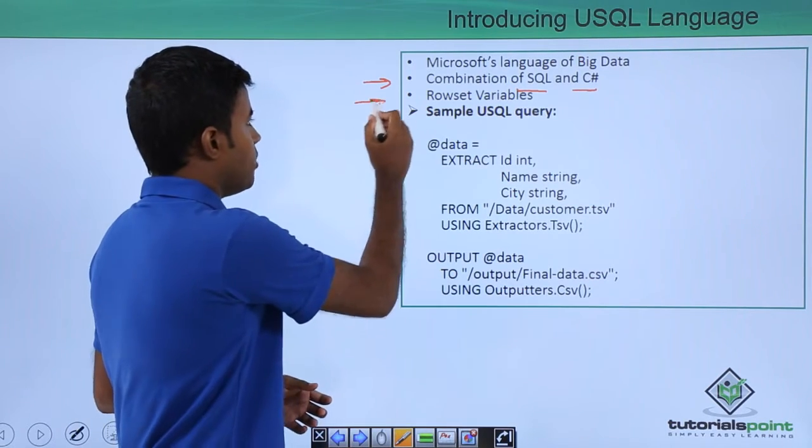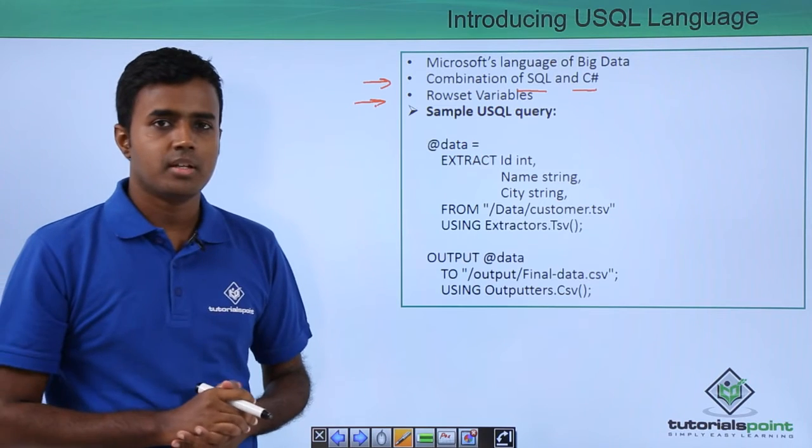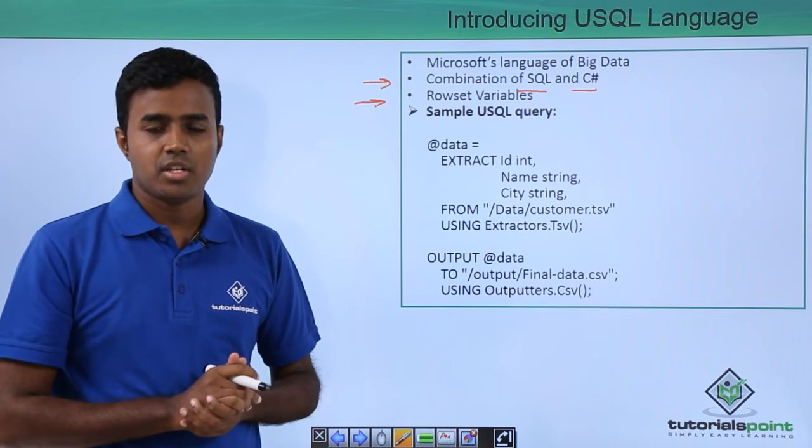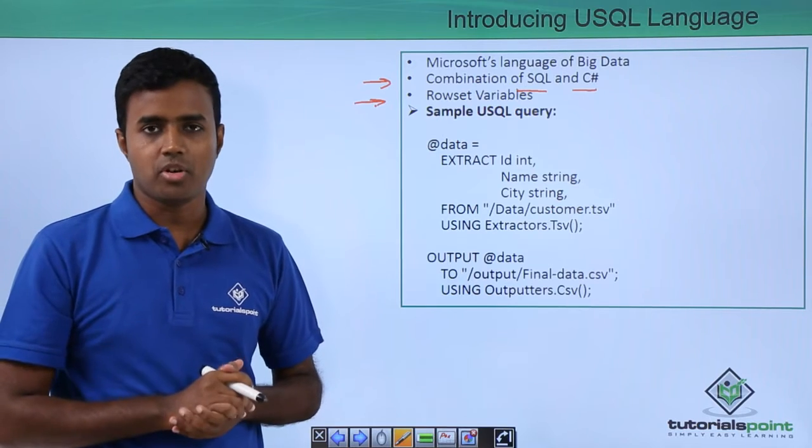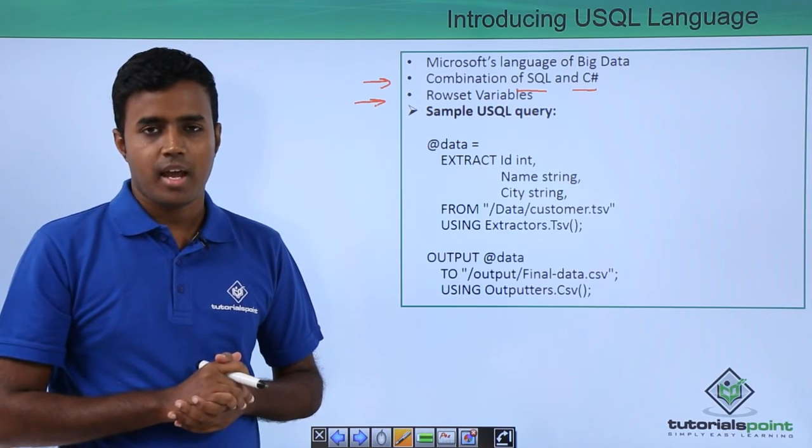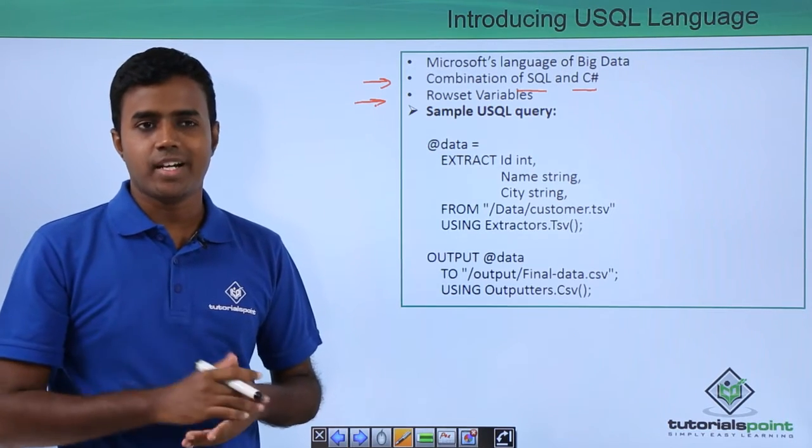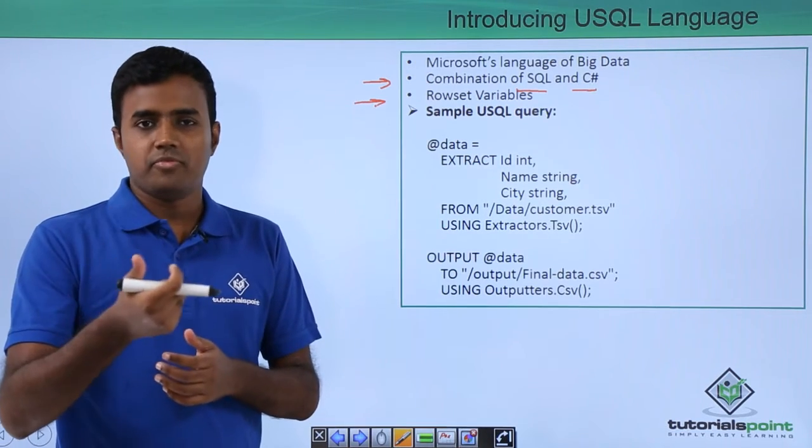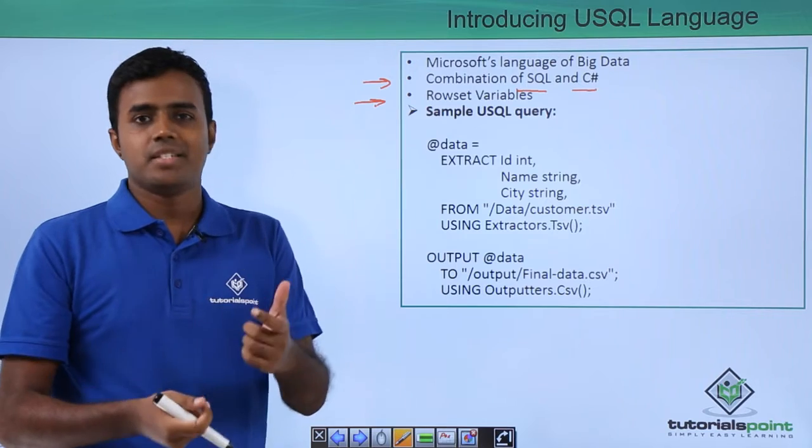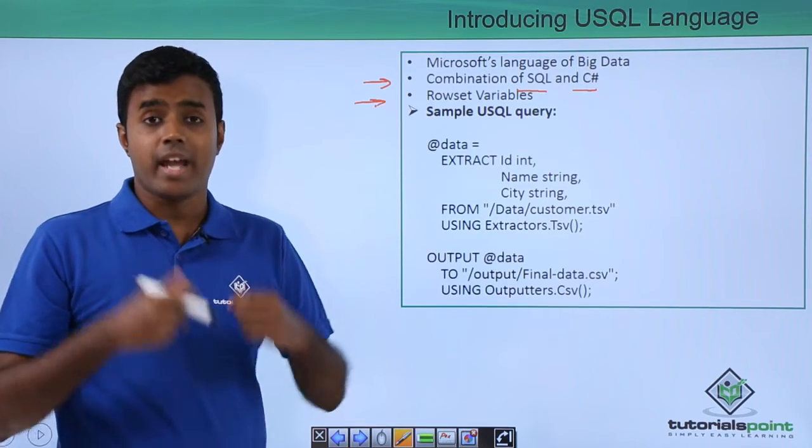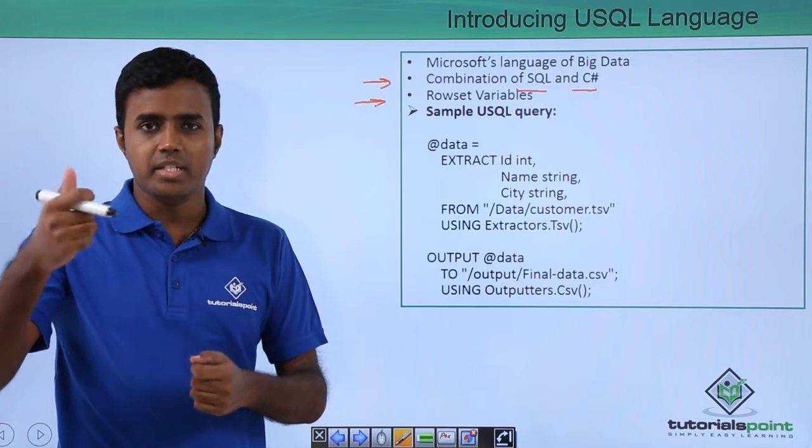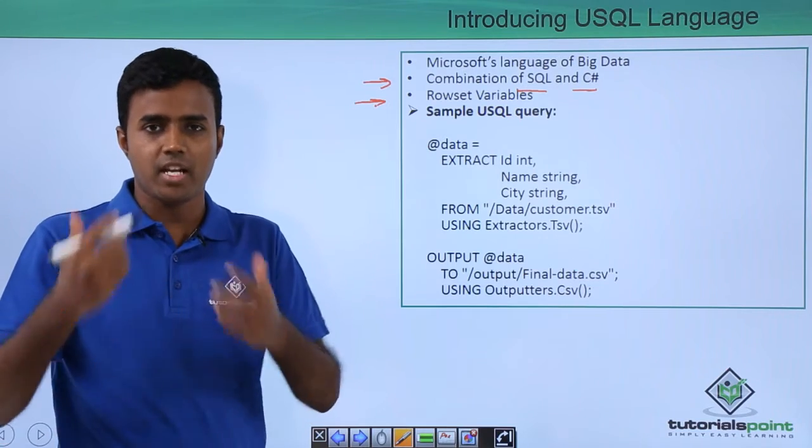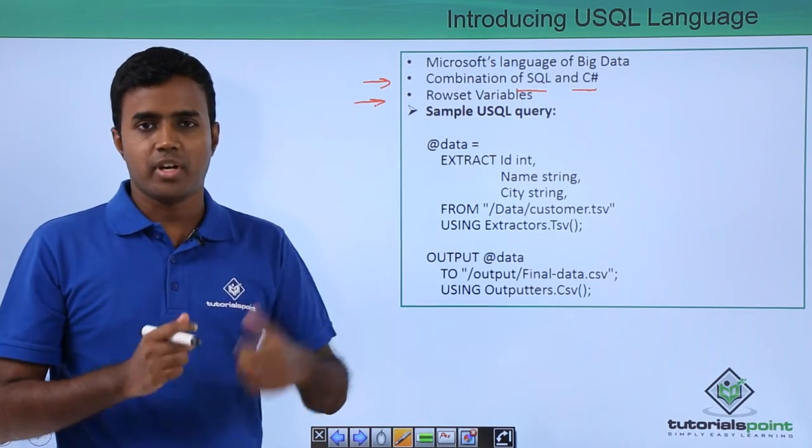It uses what are called row set variables. Most of the data types in USQL are .NET data types. It uses the power of .NET data types and their different functions. For example, it uses the string type, and since it uses the .NET string data type, it can make use of all the different functions available within that string type.